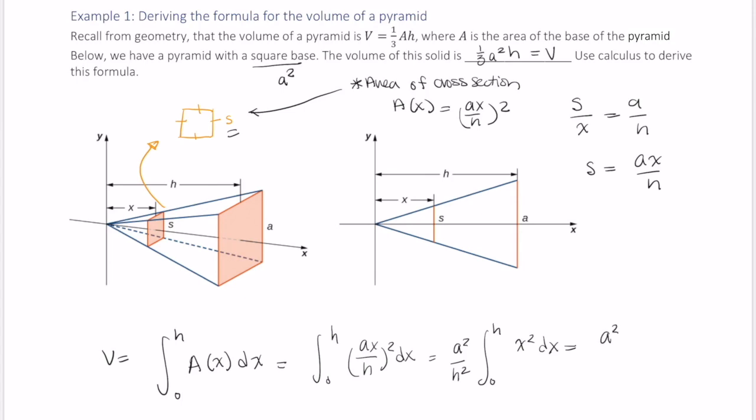So this is a squared over h squared times x cubed over 3, evaluated from 0 to h.